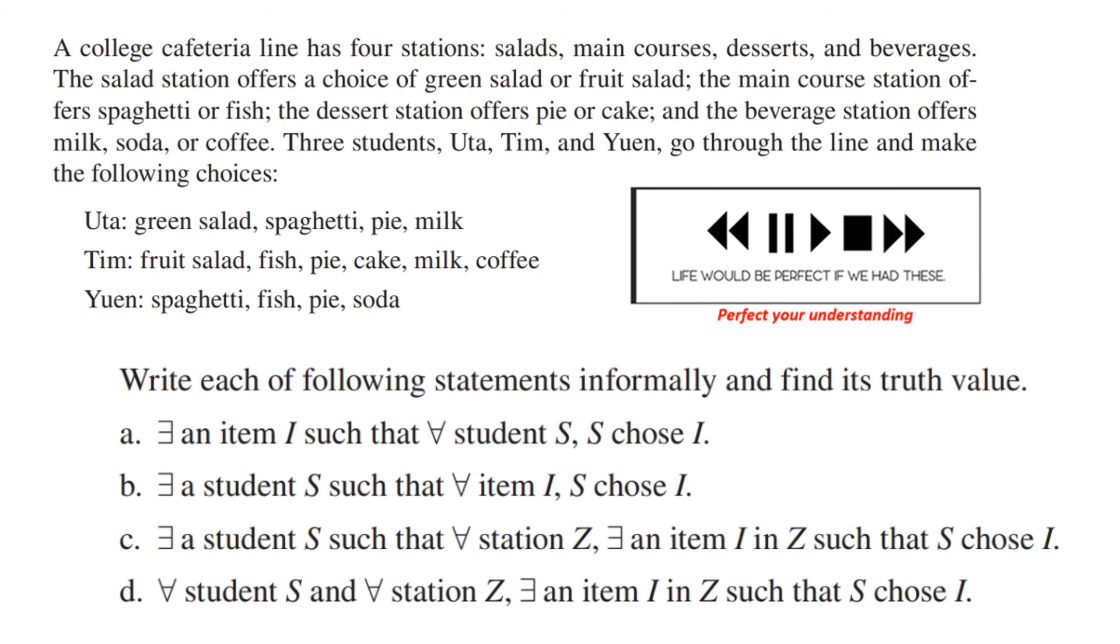Here's an example. There's a college cafeteria that has four stations. You can see them here. There are different things that people can pick there, salad or fruit salad at the salad station, and so on. You've got three students who go through the line and make the following choices. You're to write each of the following statements informally. That is, write them in words and find its truth value based on this. So, you've got four problems to do. You know what to do.